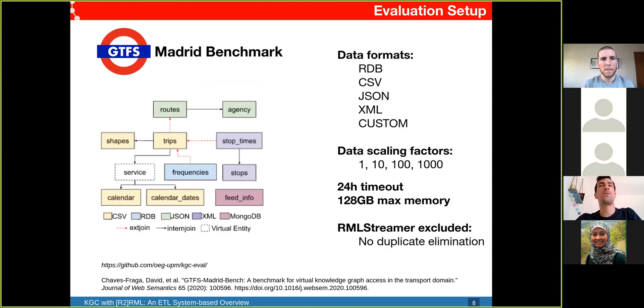For the performance evaluation, we relied on the GTFS Madrid benchmark which gives the data in several formats. Specifically, we consider relational databases, CSV files, JSON, XML, and a custom format which is a mix of the other formats. The benchmark allows us to scale the data in size. We considered scaling factors 1, 10, 100, and 1000. For experiments we used a 24-hour timeout on a machine with 128 gigabytes of memory. We excluded RML Streamer because it did not support duplicate elimination.